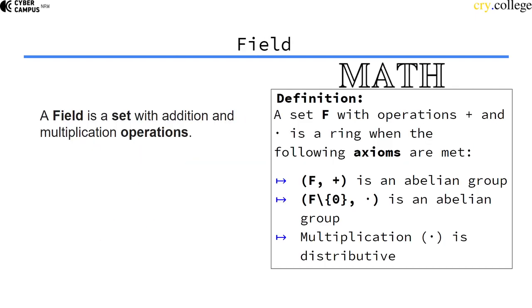A field is a set with some elements, an addition operation, and a multiplication operation. The difference between a field and a ring is that the field, the set without the number zero, is actually an abelian group under multiplication as well.